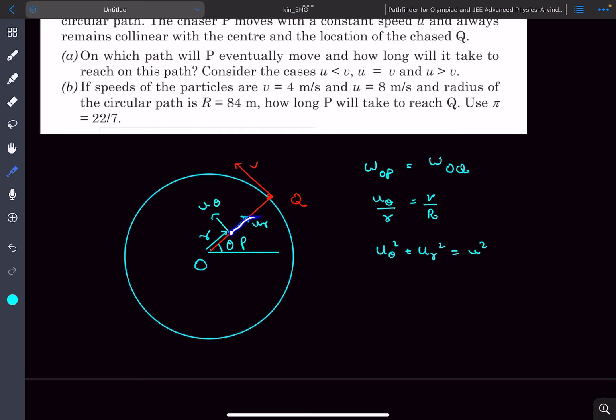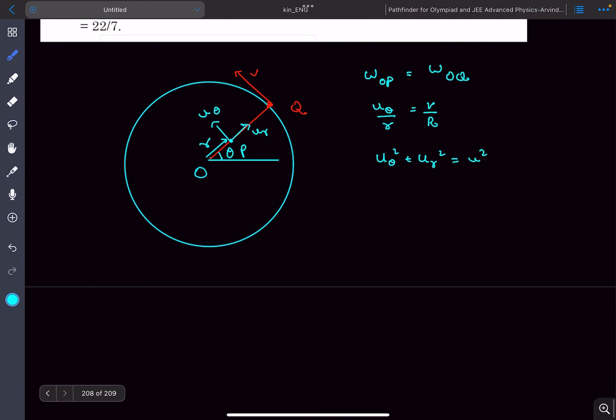So as point P reaches closer and closer towards Q, value of r will increase. And as r increases, u_theta must also increase, right? Now as u_theta increases, u_r has to decrease. After some time, u_r will become zero.